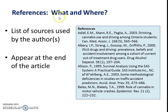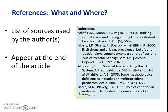So references — what and where? Here we see some examples of references. They are the list of sources used by the author and they usually appear at the end of the article in alphabetical order. We can see here the A's and then move down to the B's, so it's easy to find the full reference of an article.